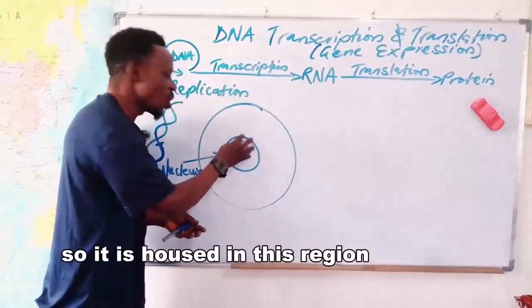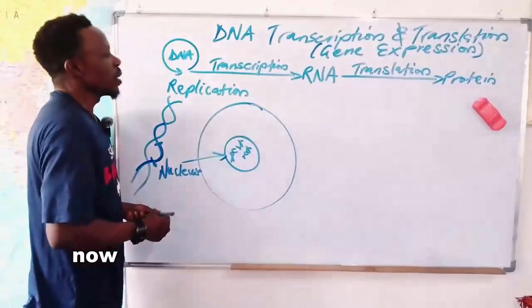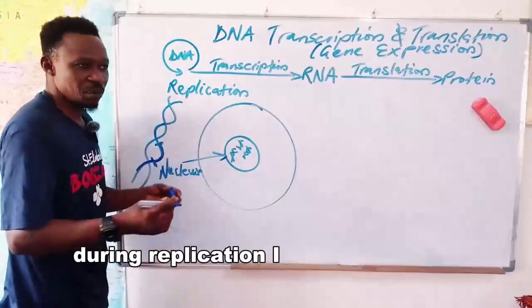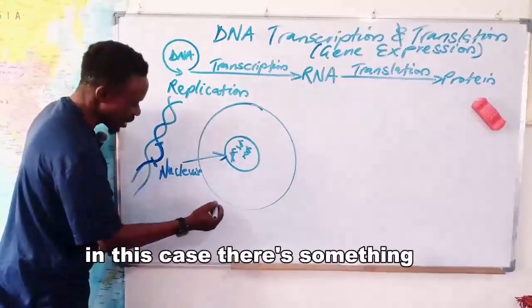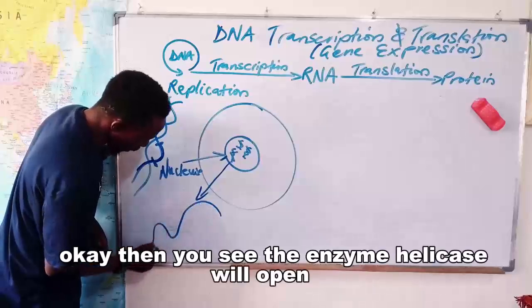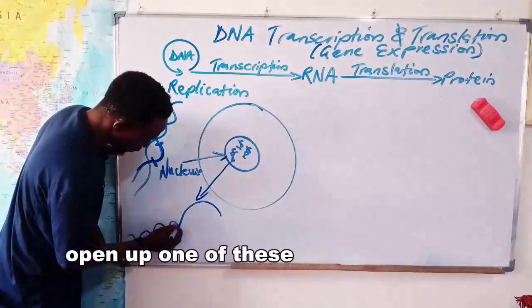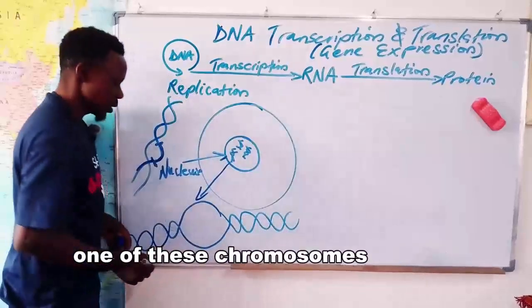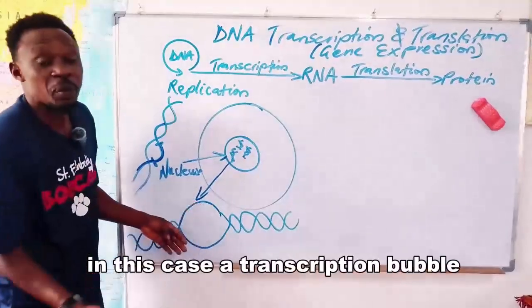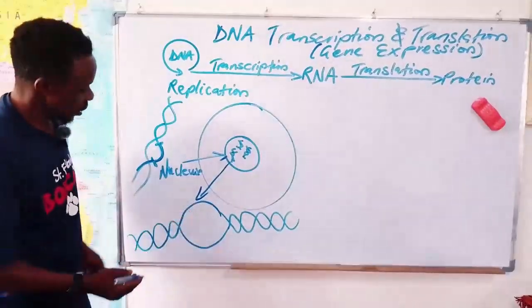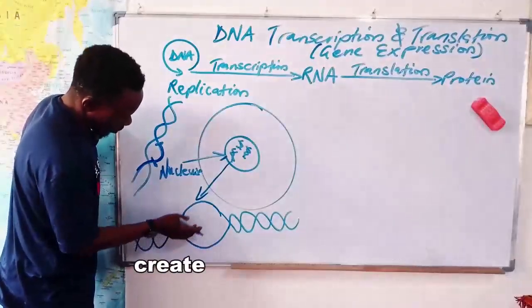In the course of transcription, enzymes come into the nucleus. During replication I mentioned enzymes like helicase — in this case similarly, the enzyme starts a process. Let us zoom in on one of these strands. The enzyme helicase opens up one of these double helix structures — one of these chromosomes — to create what we call a transcription bubble, unlike the replication bubble. A space is created.